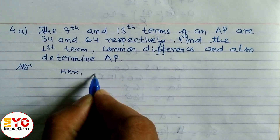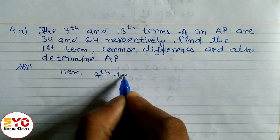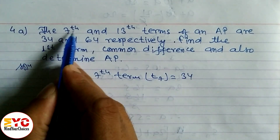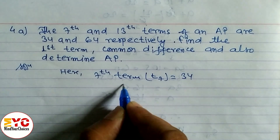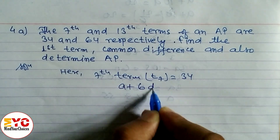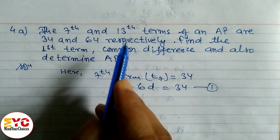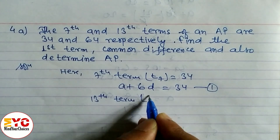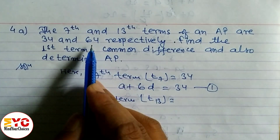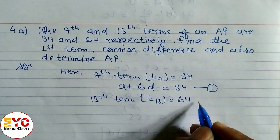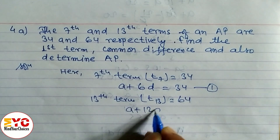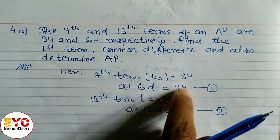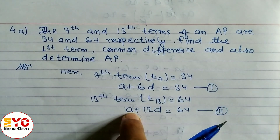The seventh term T7 is equal to 34, so we write: a plus 6d equals 34 — call this equation 1. Similarly, the 13th term T13 is equal to 64, so the formula gives us: a plus 12d equals 64 — call this equation 2.